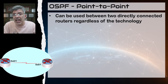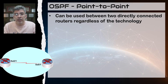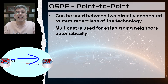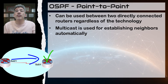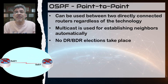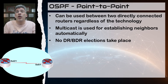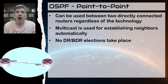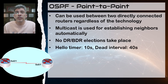For technologies such as serial connections, the point-to-point network type is mandatory and is set by default. Point-to-point means there is only one device on the other end, so even if you send multicast messages to establish adjacency, the message will be received on the other end — neighbors are established automatically. A point-to-point OSPF network type does not maintain DR/BDR roles. You don't need these roles because there are by definition only two routers — DR/BDR elections only have meaning with three or more OSPF neighbors on a single network segment.